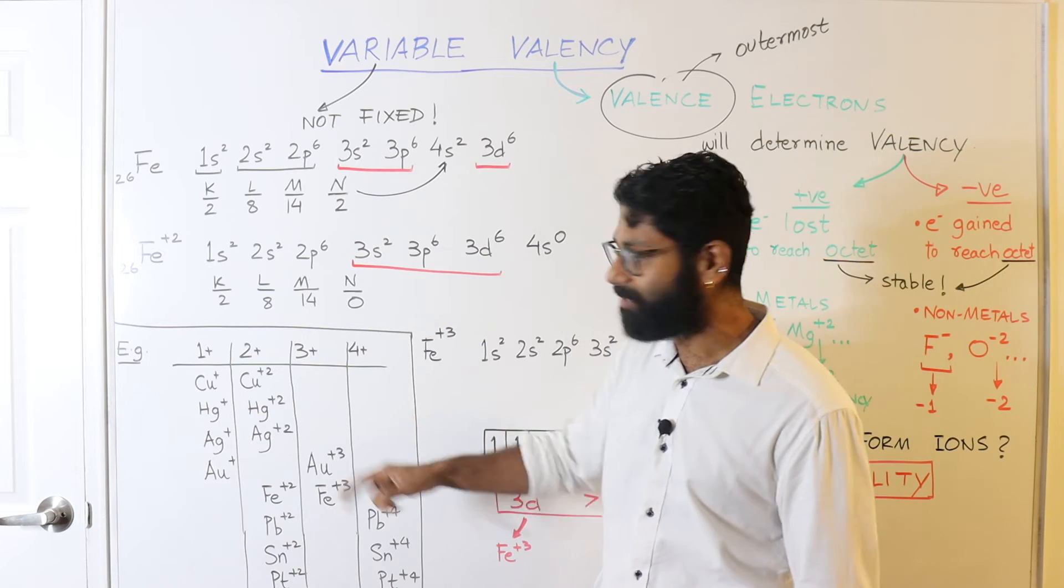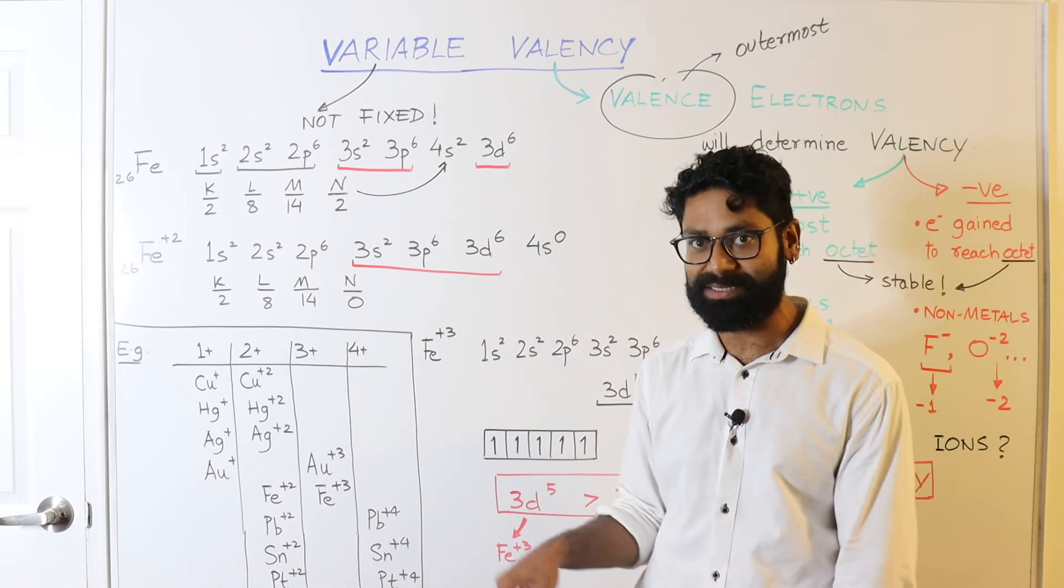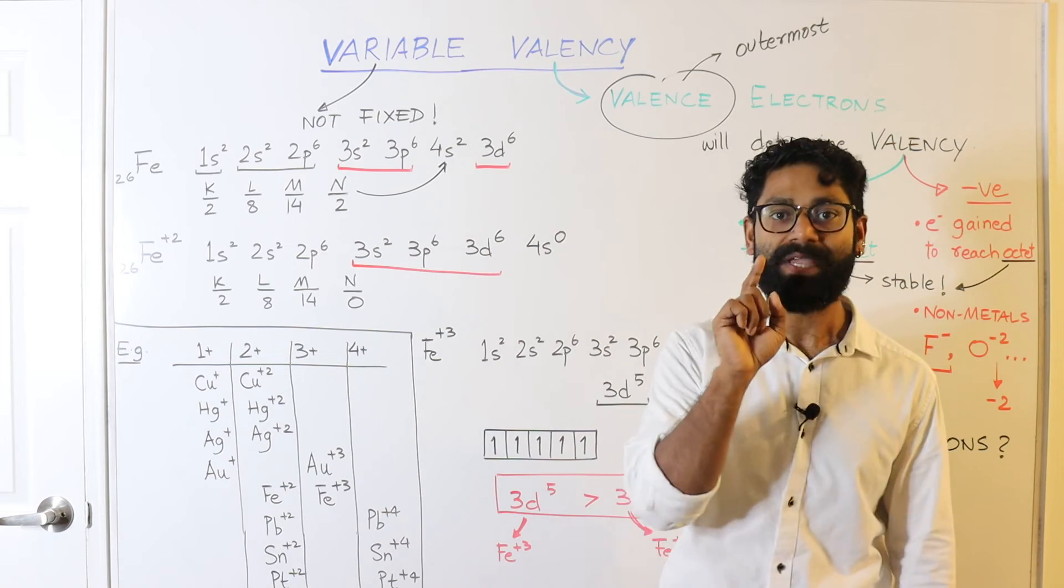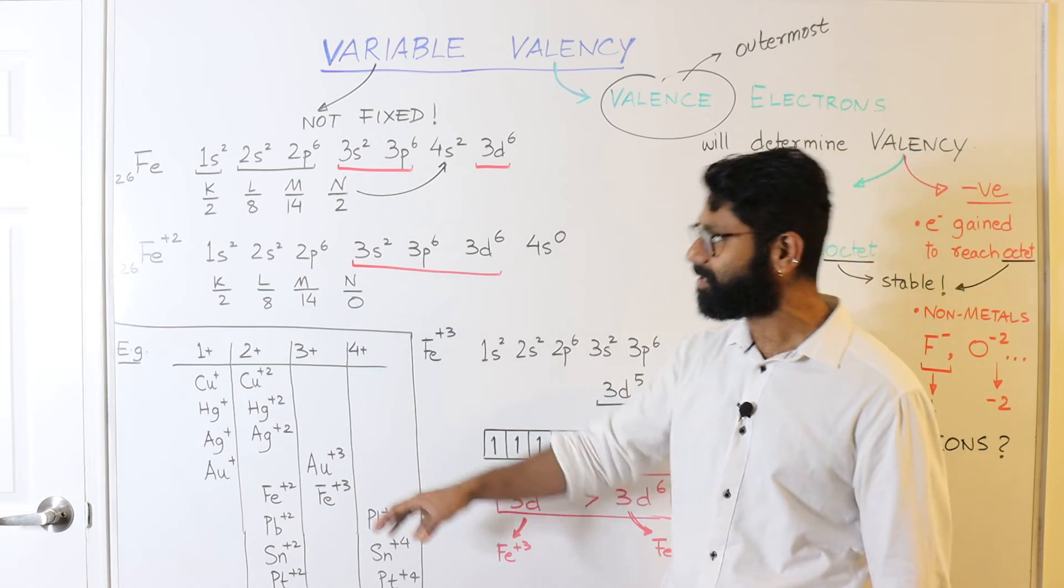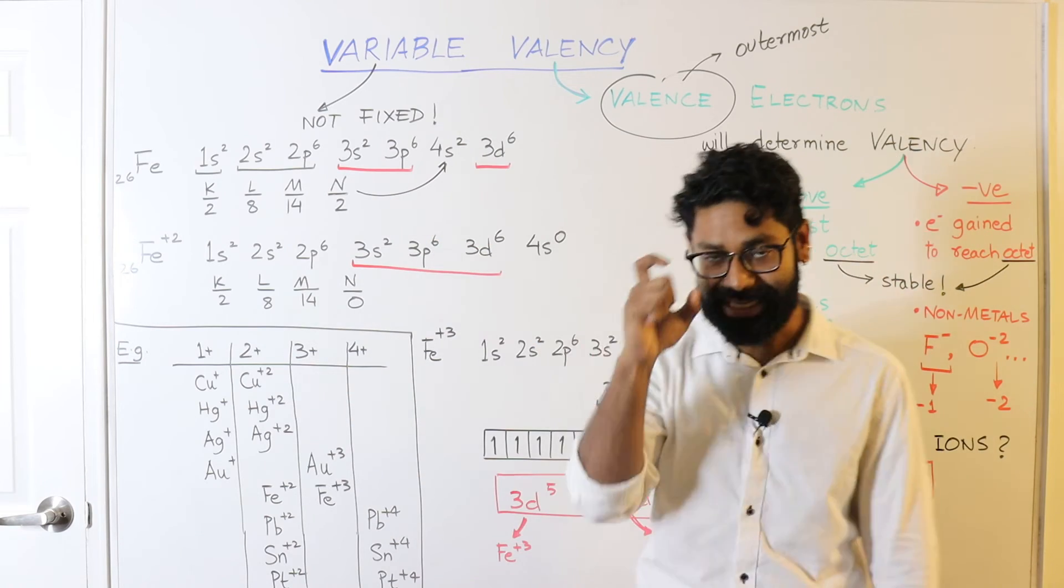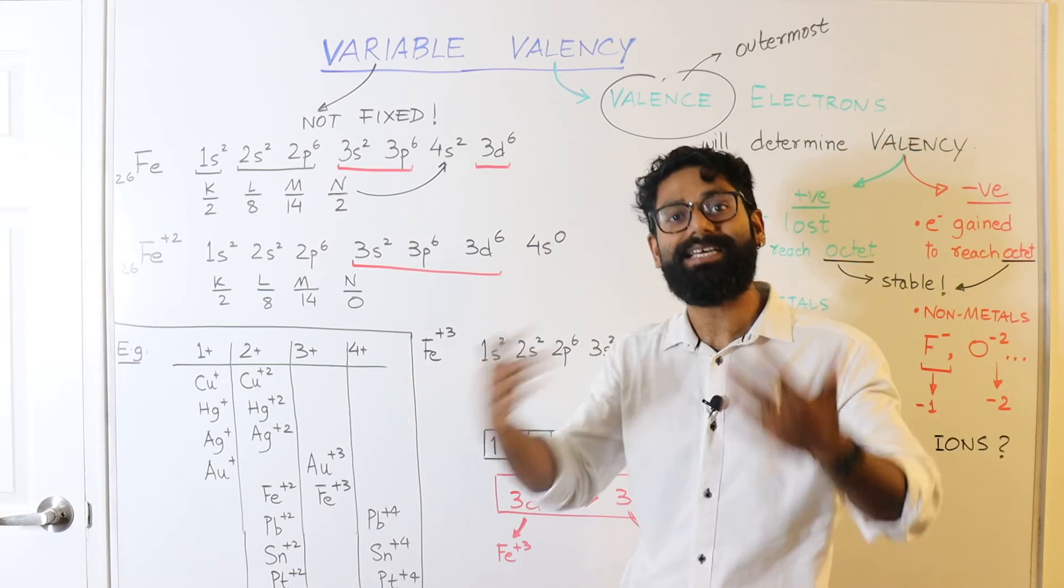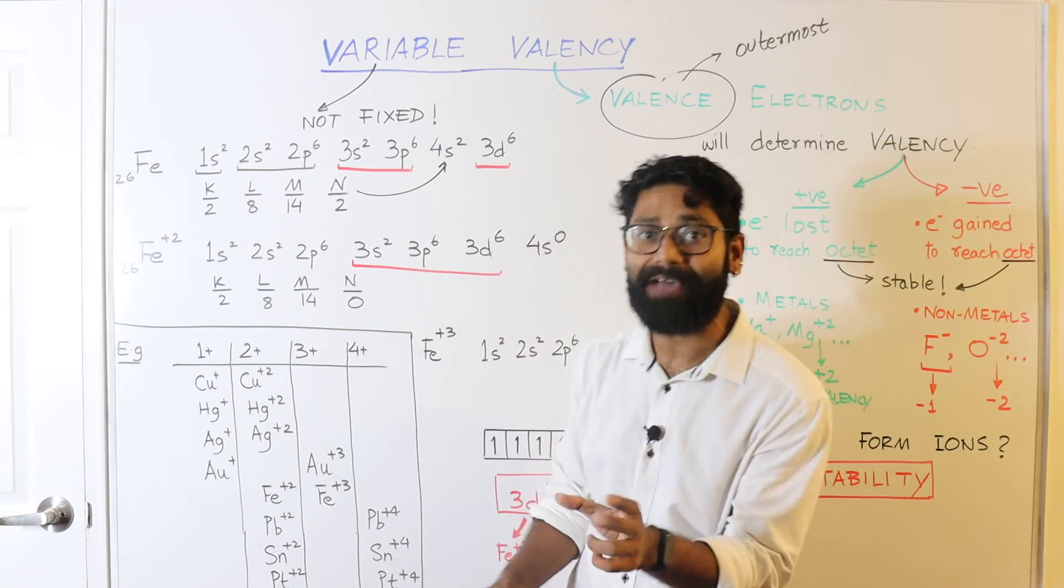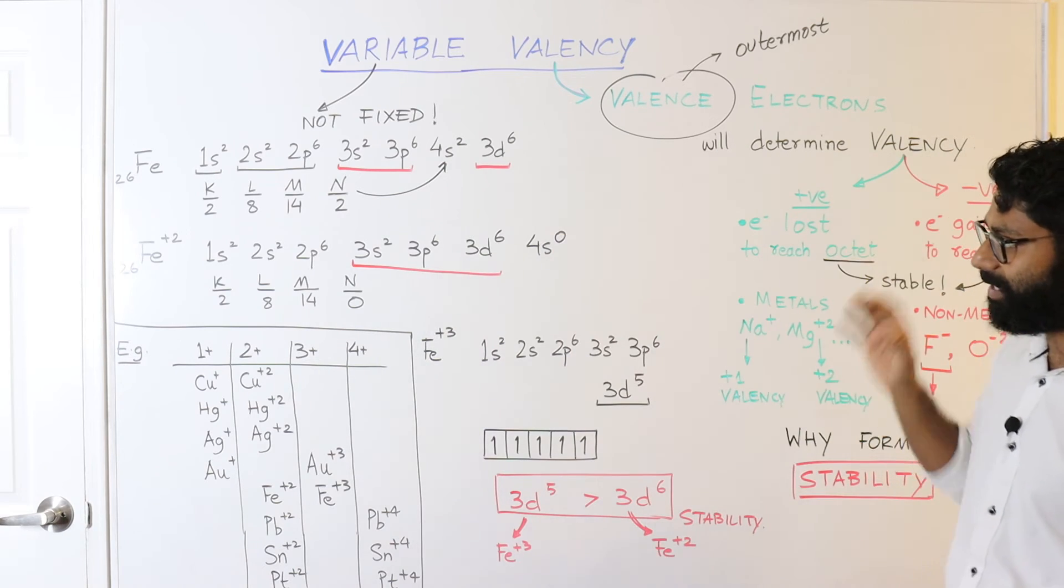Now, with the variable valency, we can explain why copper exist in plus 1 and plus 2 and not in plus 3 with electronic configuration. I hope you understand that this is because of the electronic configuration that a single atom of an element can exhibit different kinds of valencies. And that is the reason one element can have variable valencies. This is the general concept of variable valencies.